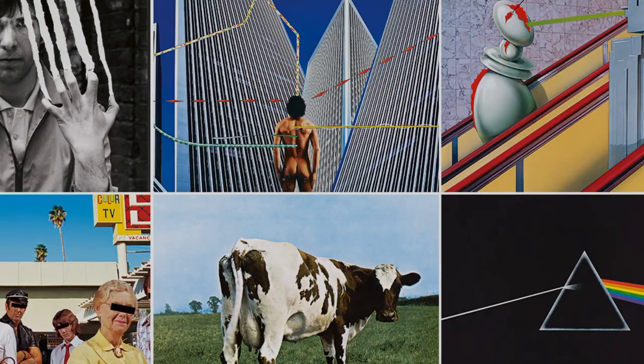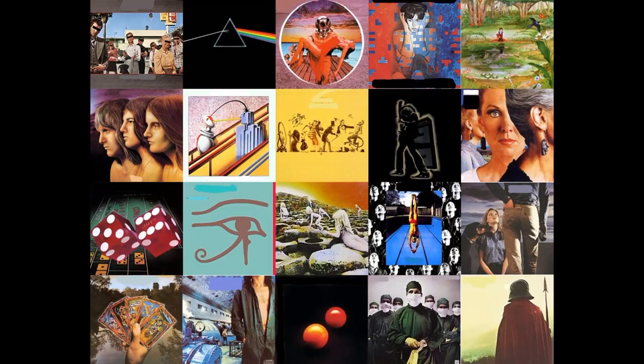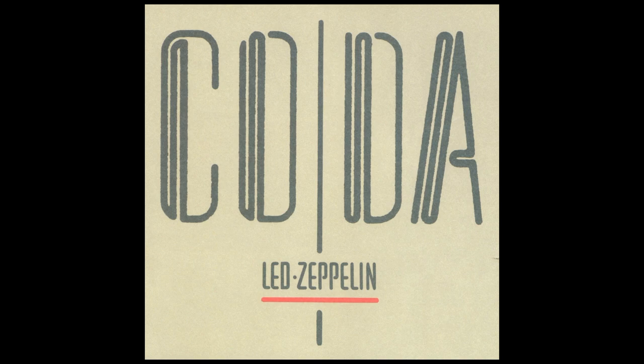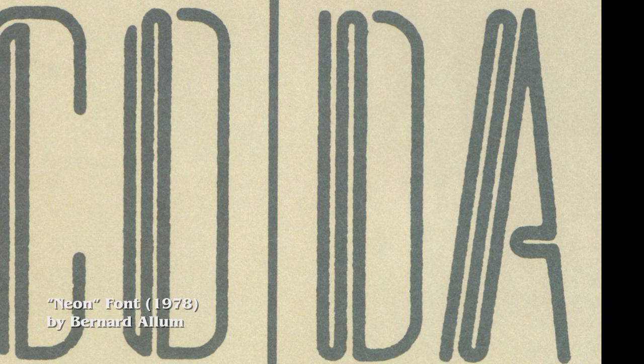Album cover design has always been a fascinating art. During the 80s most of the big bands had album covers designed by the famous English art group Hypnosis. They've done hundreds of album covers for famous artists like Pink Floyd, Black Sabbath, AC/DC, Scorpions and many others. Led Zeppelin's Coda album for example had a simple but beautiful typography on its cover. It used a font called Neon, which was designed in 1978 by Bernard Allum, and these fonts had each letter drawn from a single line which made it perfect for neon signs.